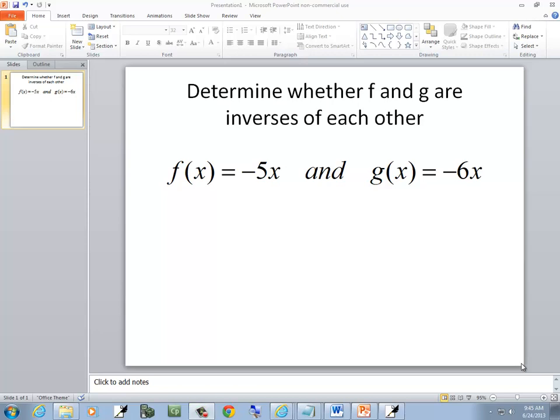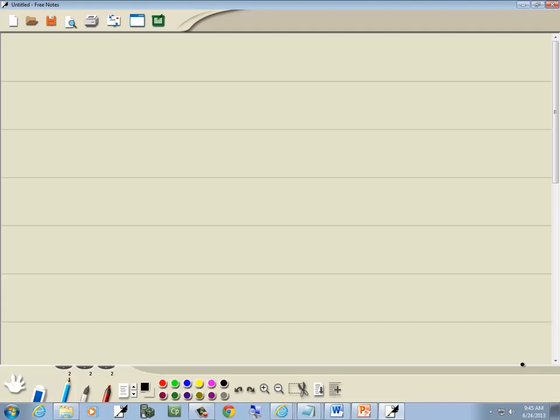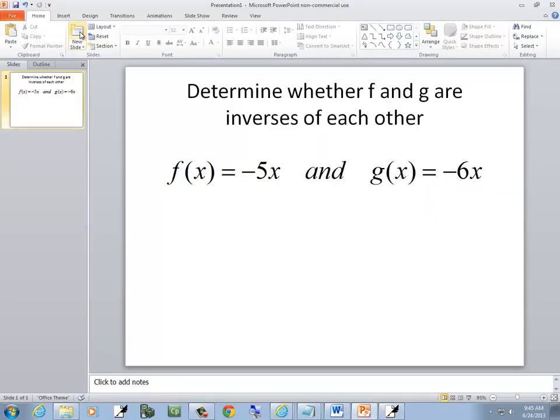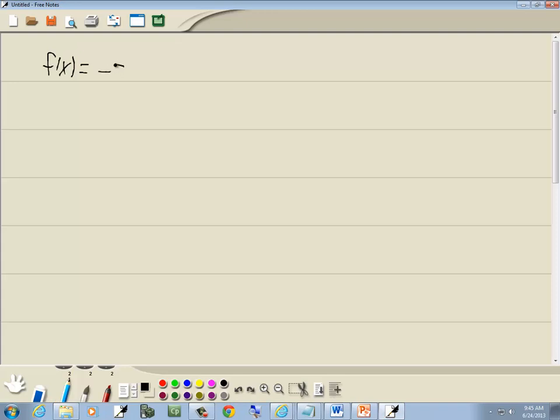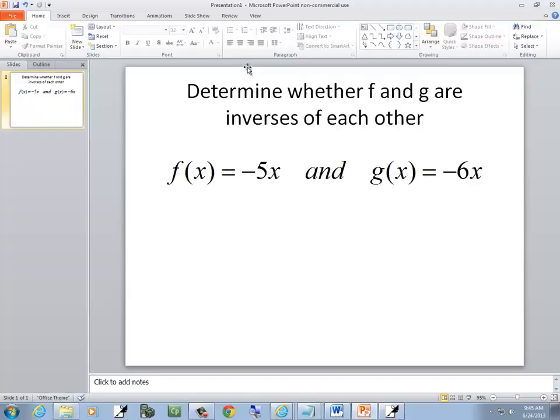This problem, we want to determine whether f and g are inverses of each other algebraically. So we've got f of x is equal to negative 5x, and g of x is equal to negative 6x.